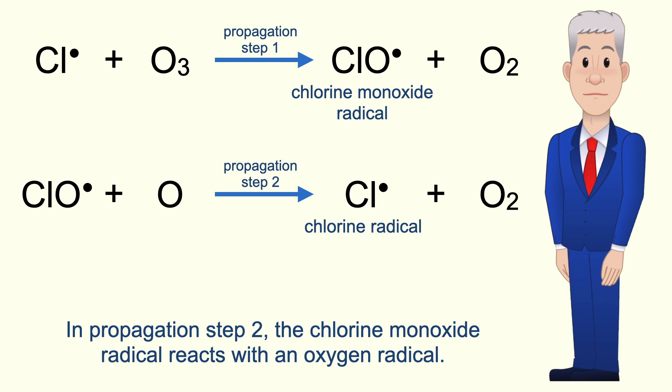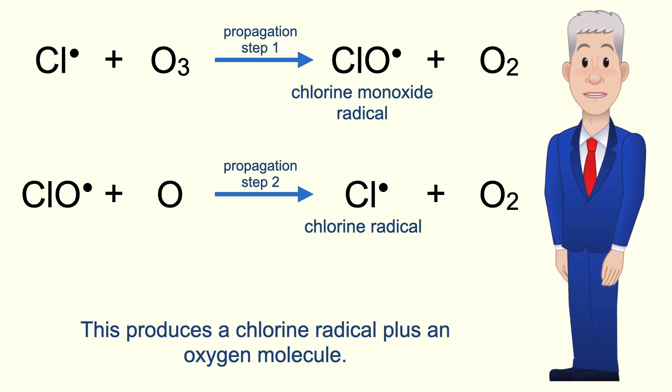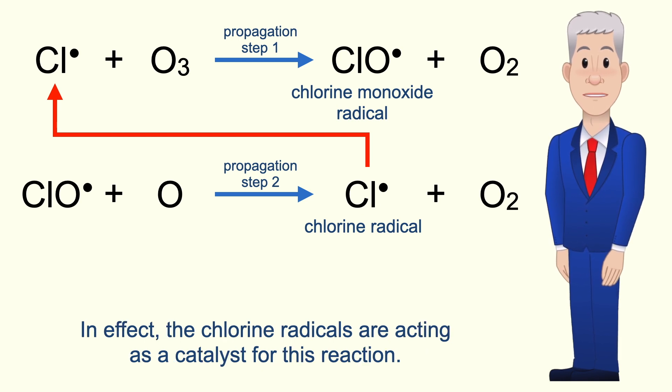In propagation step two, the chlorine monoxide radical reacts with an oxygen radical. As we saw earlier, oxygen radicals are constantly formed in the stratosphere. This produces a chlorine radical plus an oxygen molecule. Now the chlorine radical from step two can go back and trigger step one again. So in effect, the chlorine radicals are acting as a catalyst for this reaction.